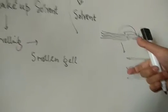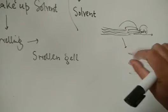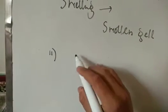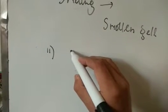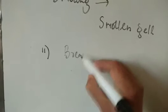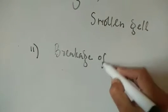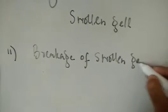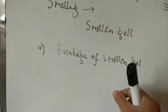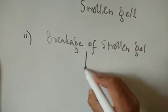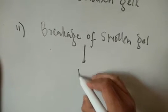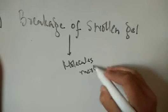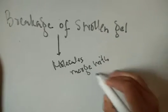After the chains swell up by absorbing solvent, at a certain stage they will break down — they will burst. The swelled polymer chains burst up, and this is step number two: breakage of the swollen gel. Once the swollen gel gets broken down, it merges with the solvent — the chains mix with and merge with the solvent molecules.